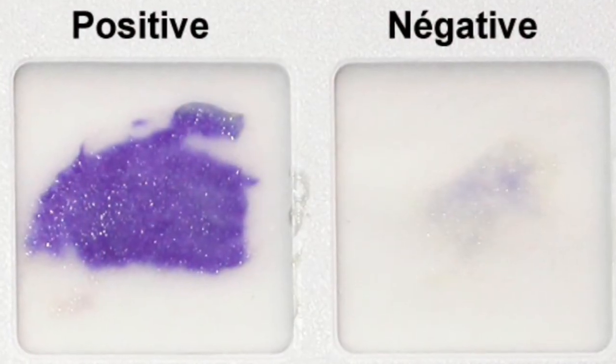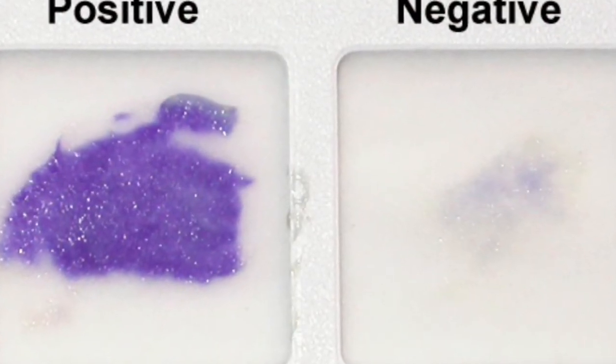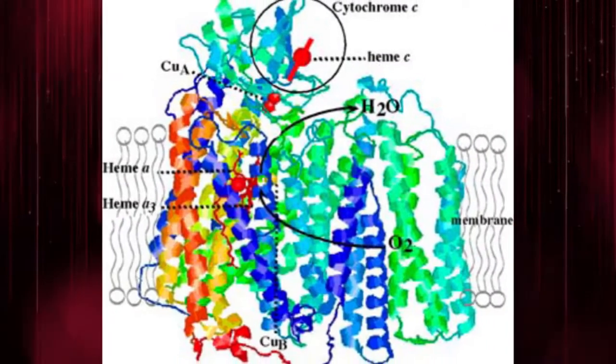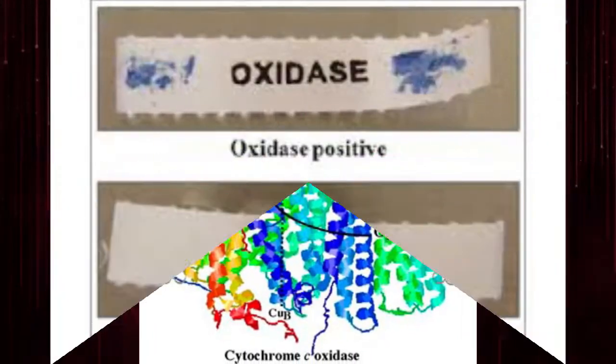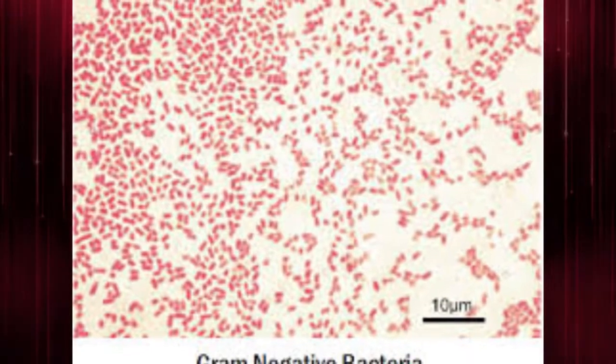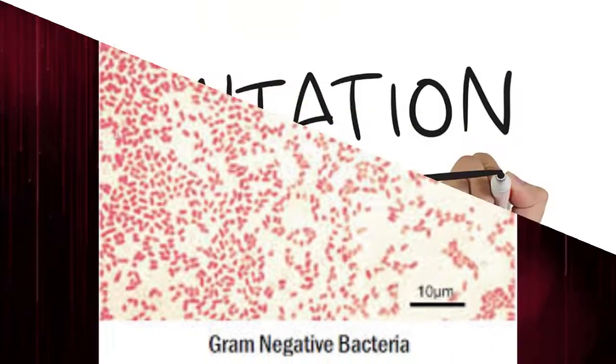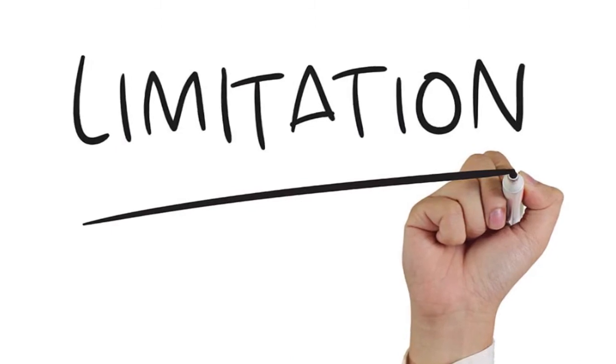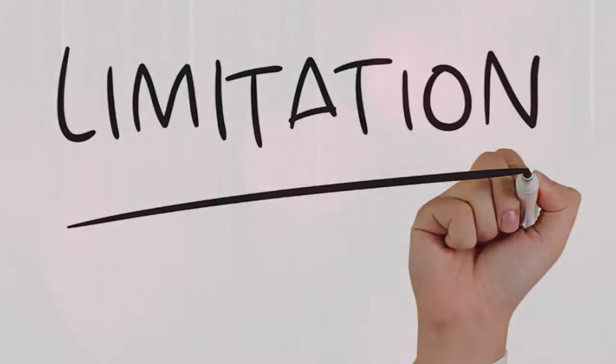The oxidase test is used to identify bacteria that produce cytochrome oxidase enzyme. Oxidase test is an important differential and identification procedure of gram-negative bacteria. In this video we're going to discuss limitations of oxidase test.